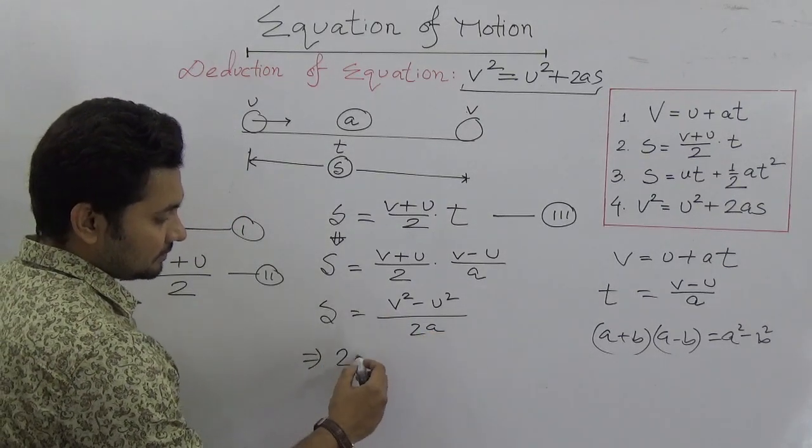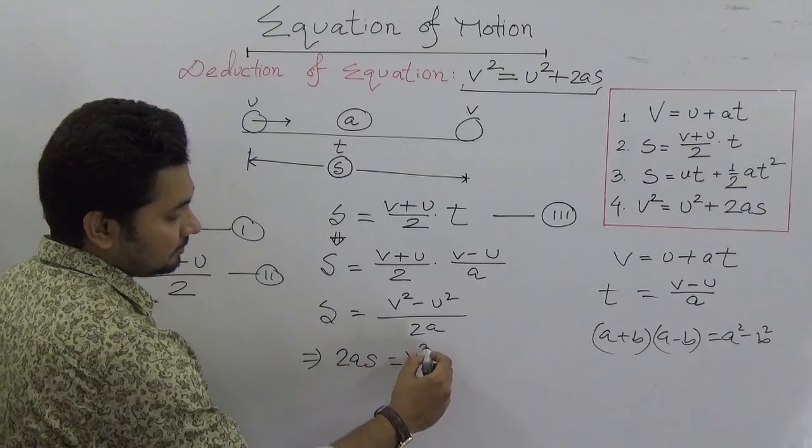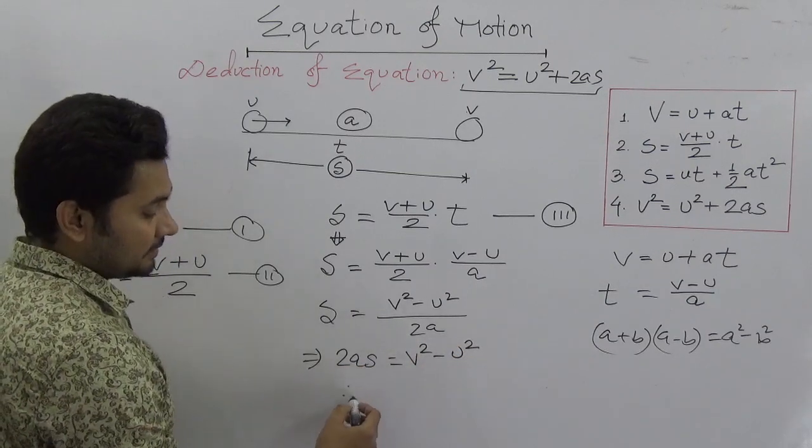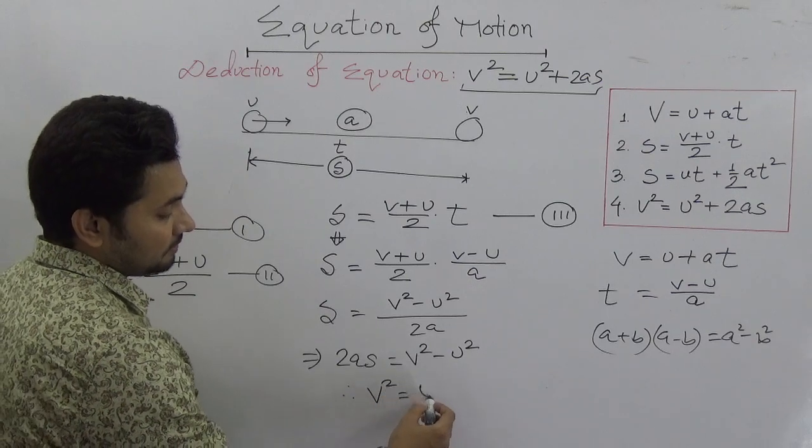The equation would be 2as = v² - u², so we can write that v² = u² + 2as, very simply.